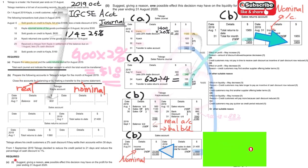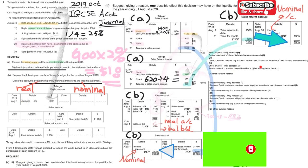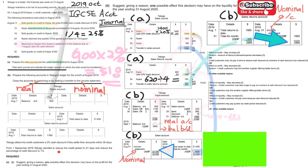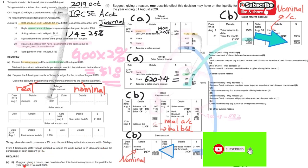Moving on to C1: the current terms allow a 2% cash discount if customers settle their accounts within 30 days. The proposal is to reduce the credit period to 21 days and reduce the cash discount to 1%.